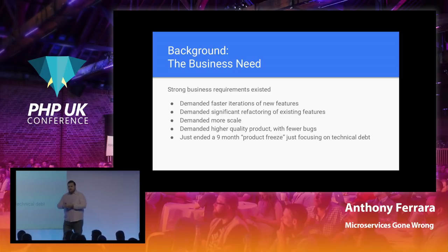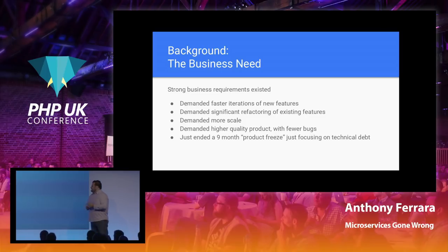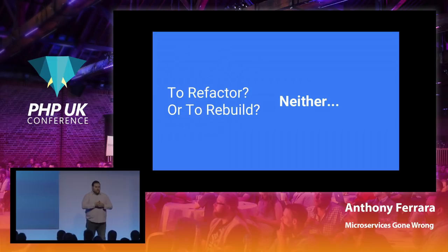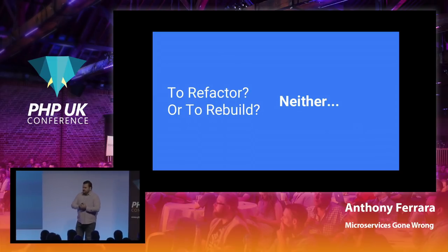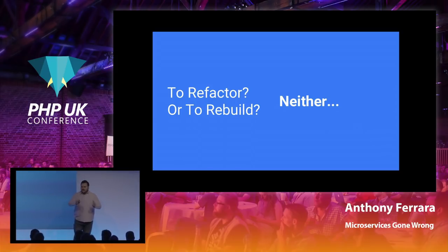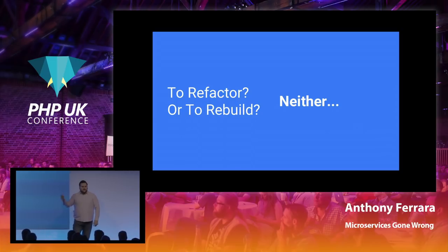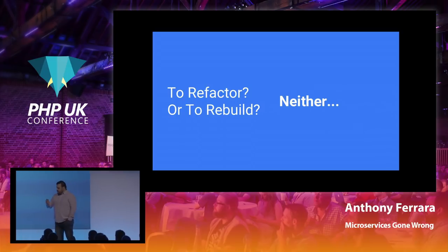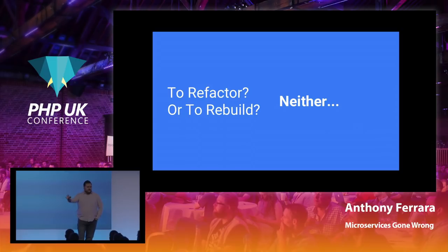We needed to ship faster, ship better code, ship stable products, and the business was really demanding. We hit a precipice point where we had to make a decision: do we continue trying to refactor the existing codebase, or do we throw away the existing platform and build a new one? And so the way we approached this question — I think — is really interesting, and the answer we got to is quite unexpected.